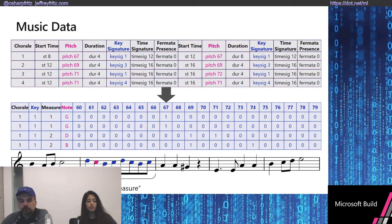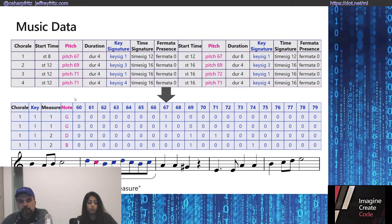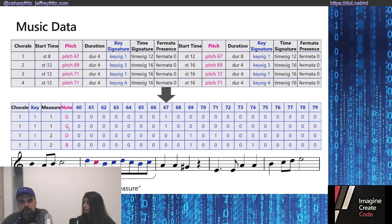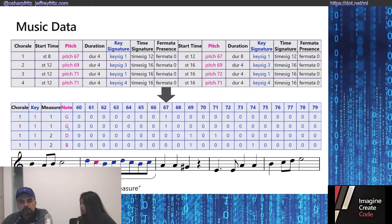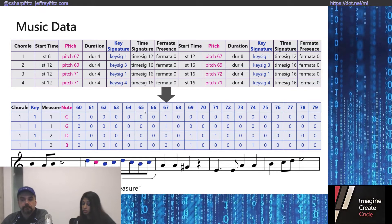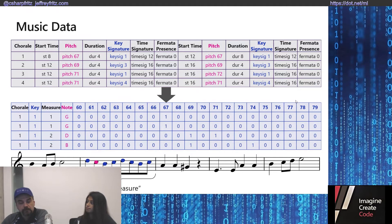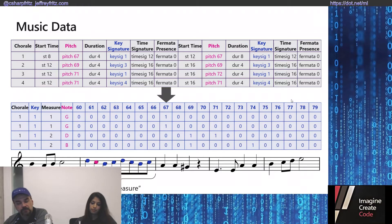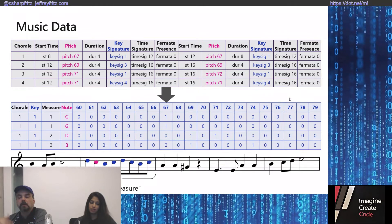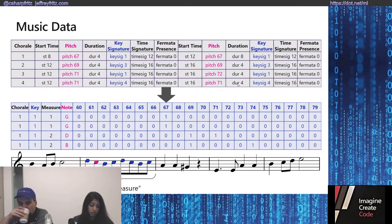For the purposes of machine learning, the note that we're predicting is called a label, and then the rest of the things that we're using to predict them are called features. So we're going to inspect our features to predict a label. Let's get started on building the model.